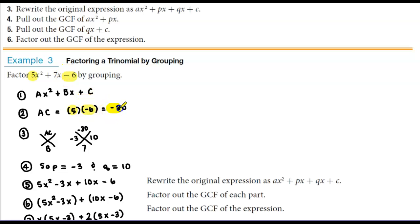We multiply them together to get -30. So ac is -30, and then we have the value of b which is 7.